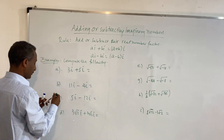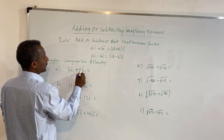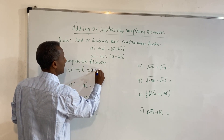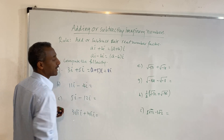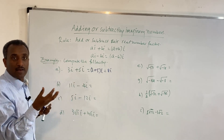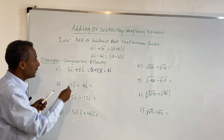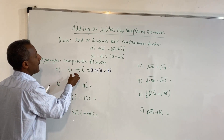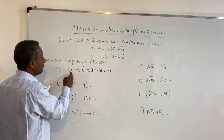Let me start. 3i plus 5i is equal to 3 plus 5, times i, which is 8i. We can combine them because they are like terms — we add them by adding their real coefficients.